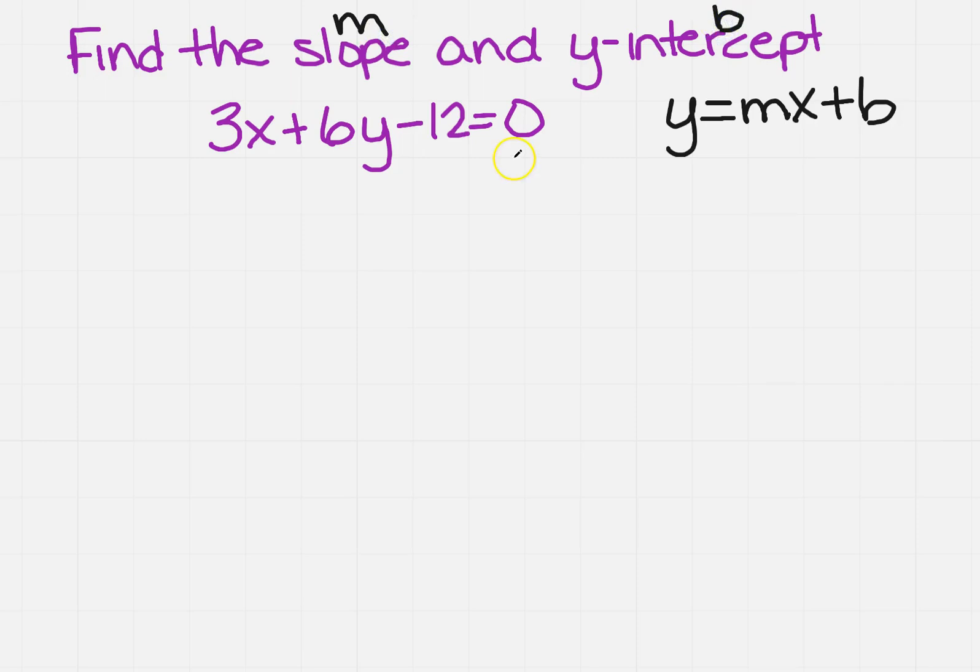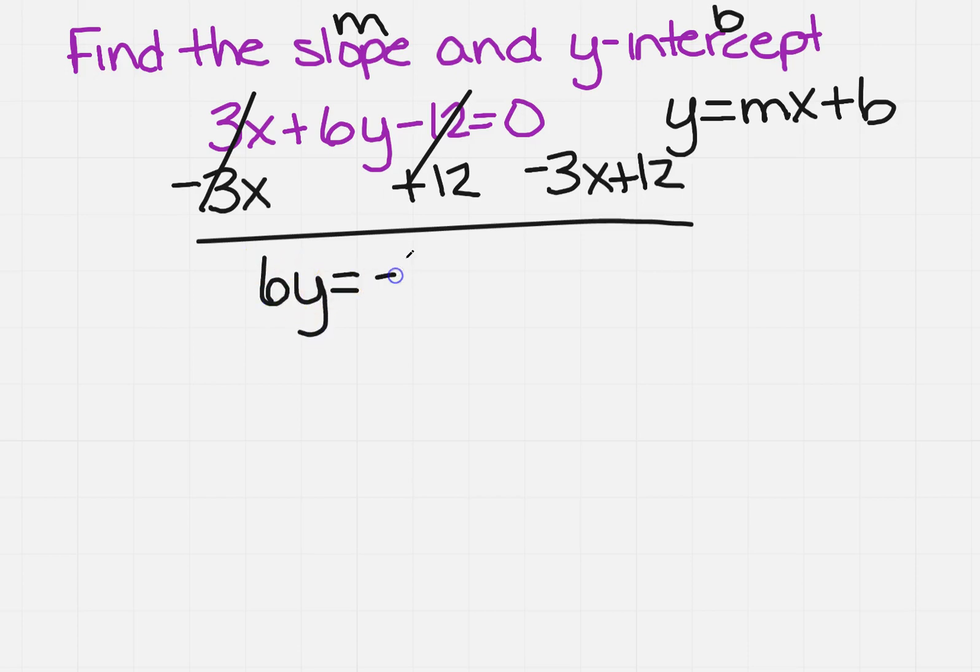So if I need to get y all by itself, I'm going to have to subtract 3x and add 12 to both sides of the equation. So that will give me 6y equals minus 3x plus 12.